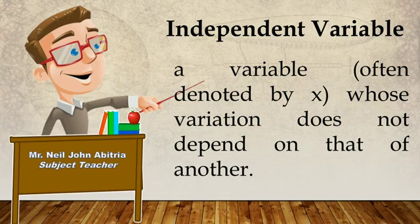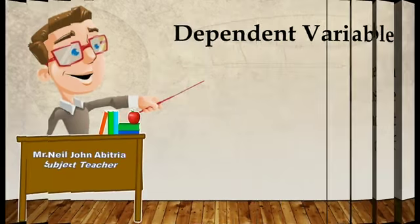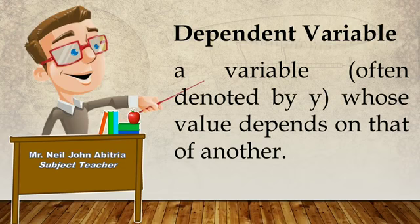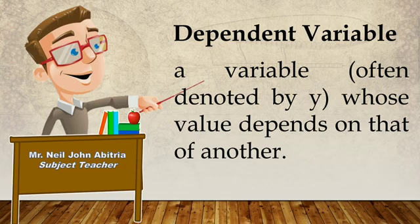So, it is like an independent person. Independent variables are changed by choice — you can pick what value they will be. Unlike the dependent variable, which is a variable often denoted by y whose value depends on that of another. It's like a child that depends on or needs their parents.